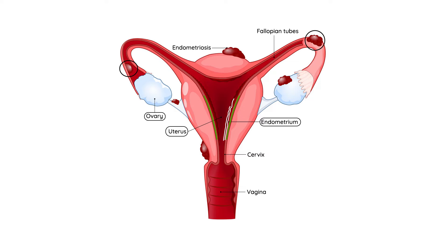Keep in mind that these endometriosis implants — the ectopic tissues I'm circling — can be found in many places, including ligaments. That's the fundamental aspect of endometriosis: endometrial tissue has somehow found its way into ectopic areas, and that causes problems.